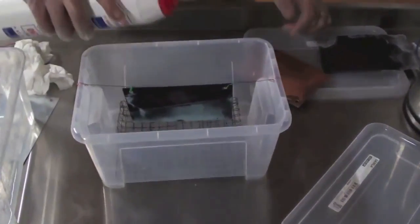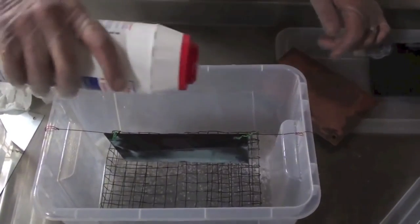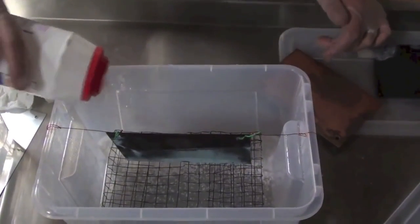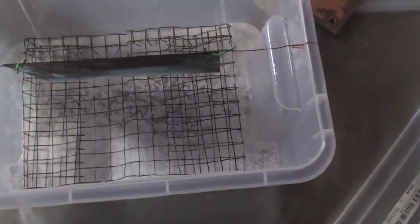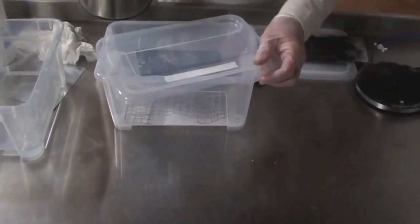Then we are going to put the caustic again, very little this time. You don't need that much. And do the second time vapor nanocoating.